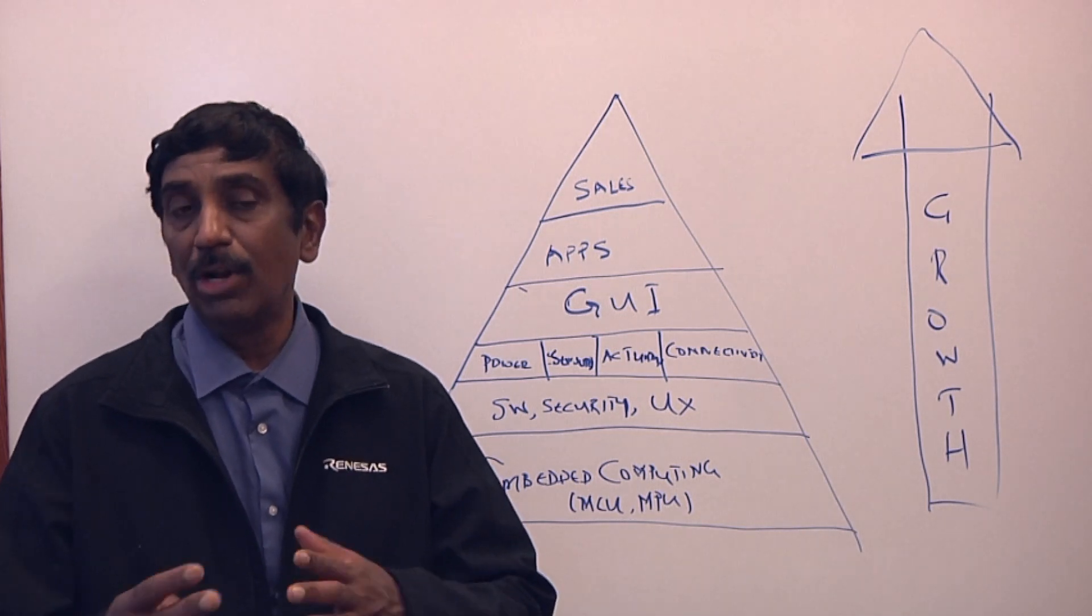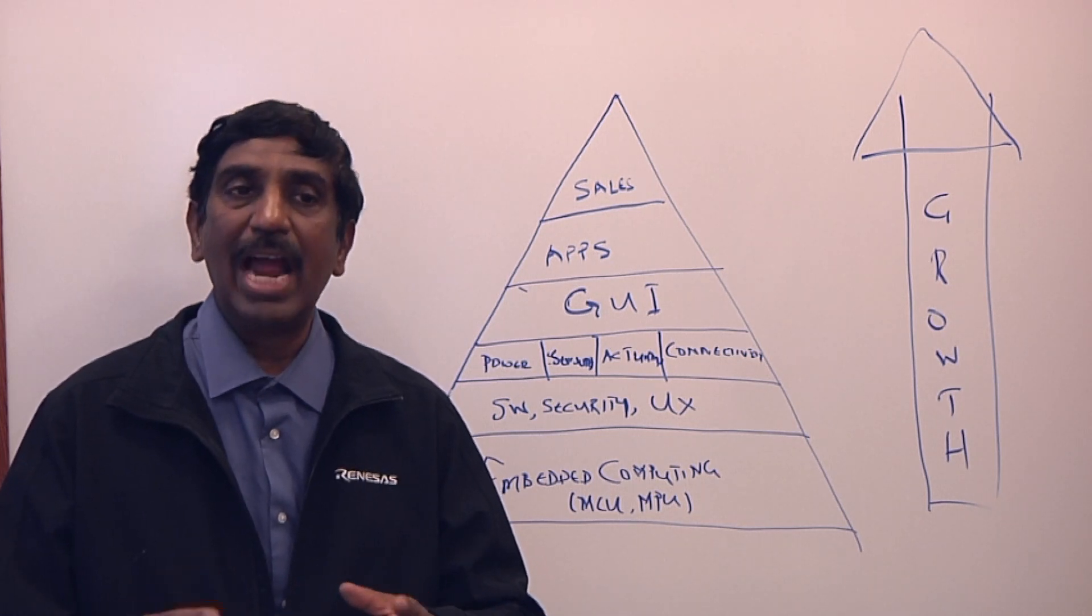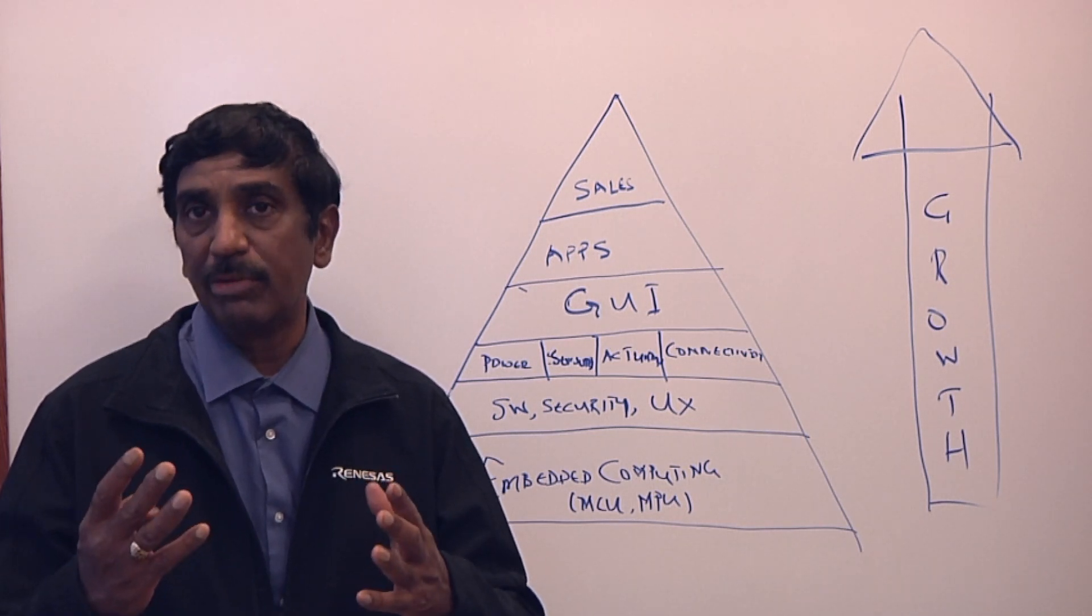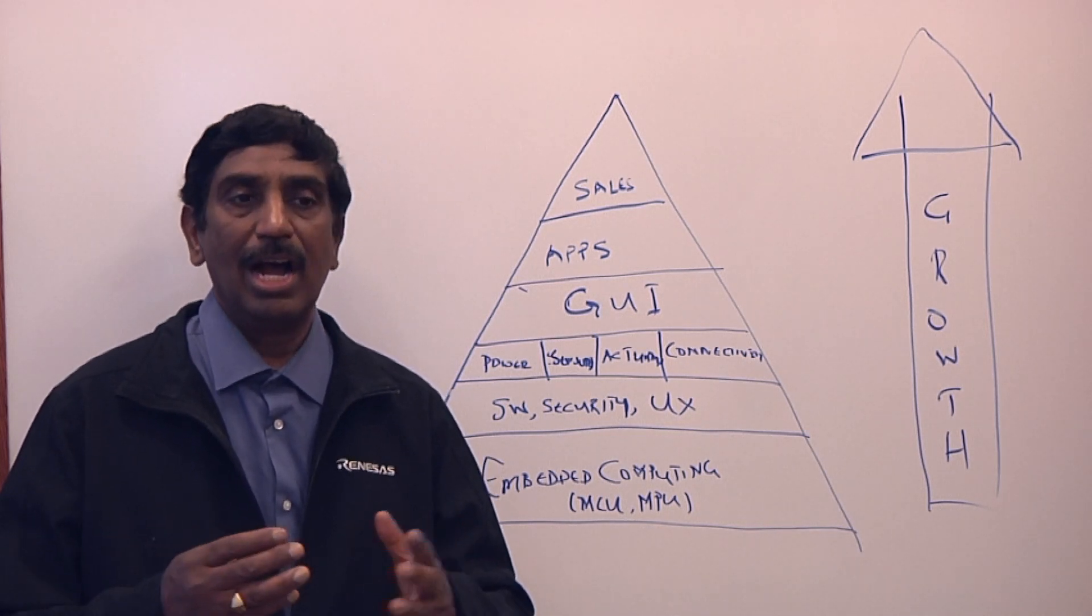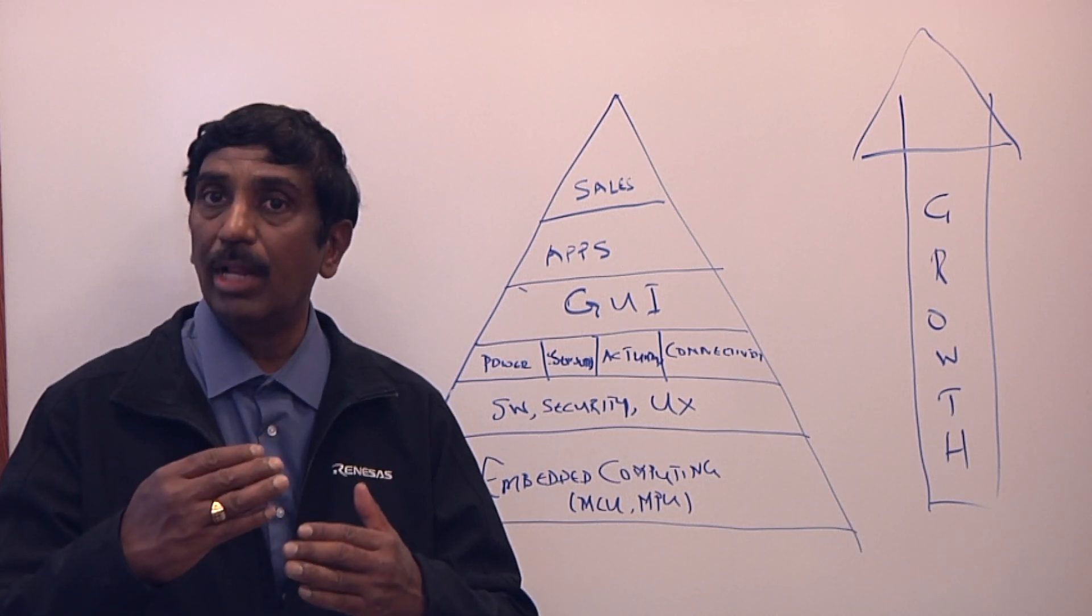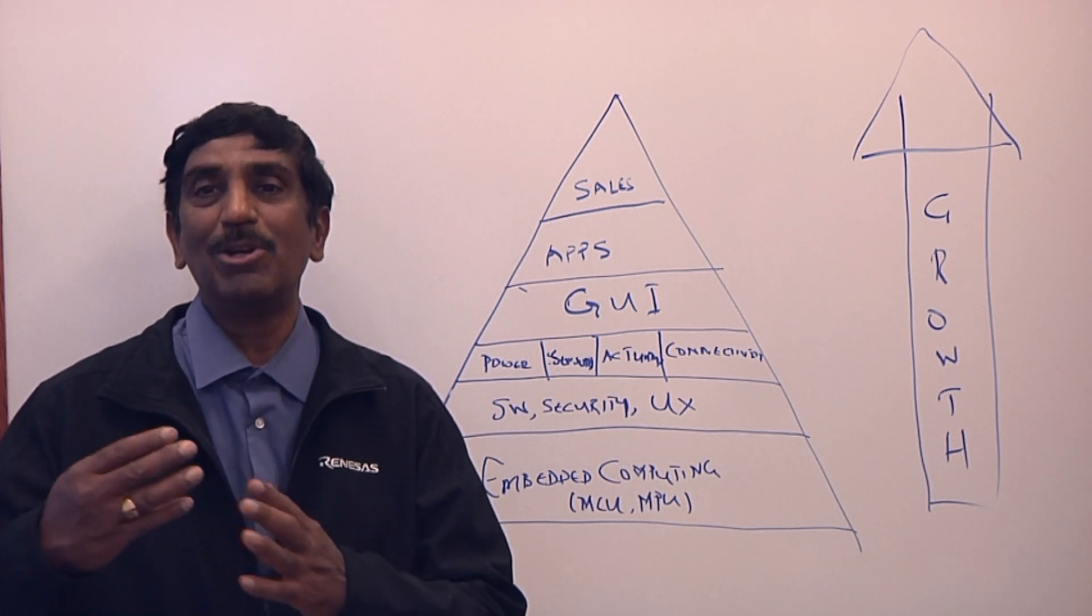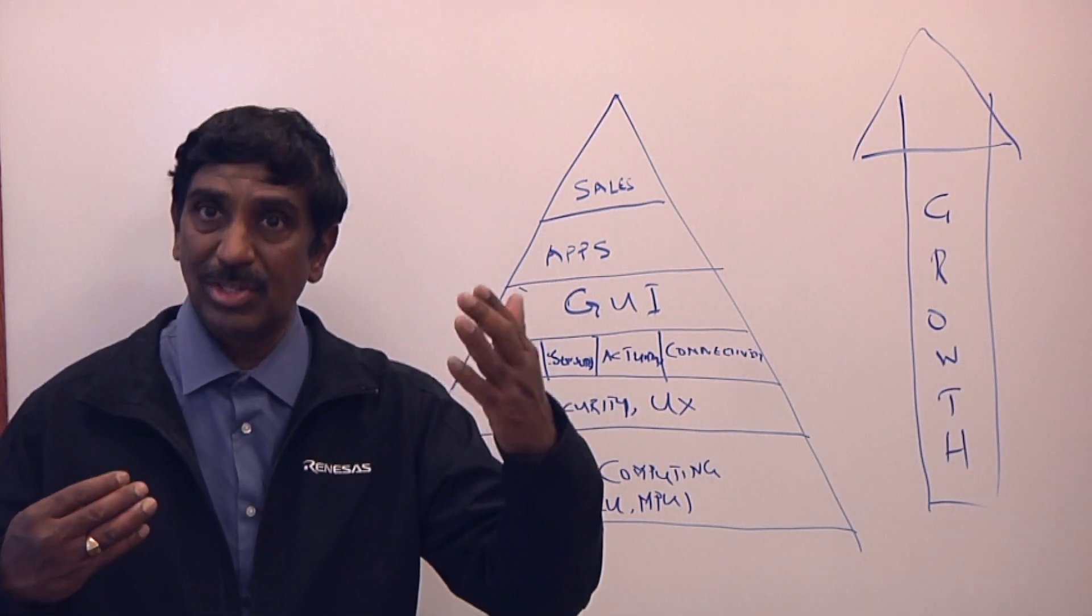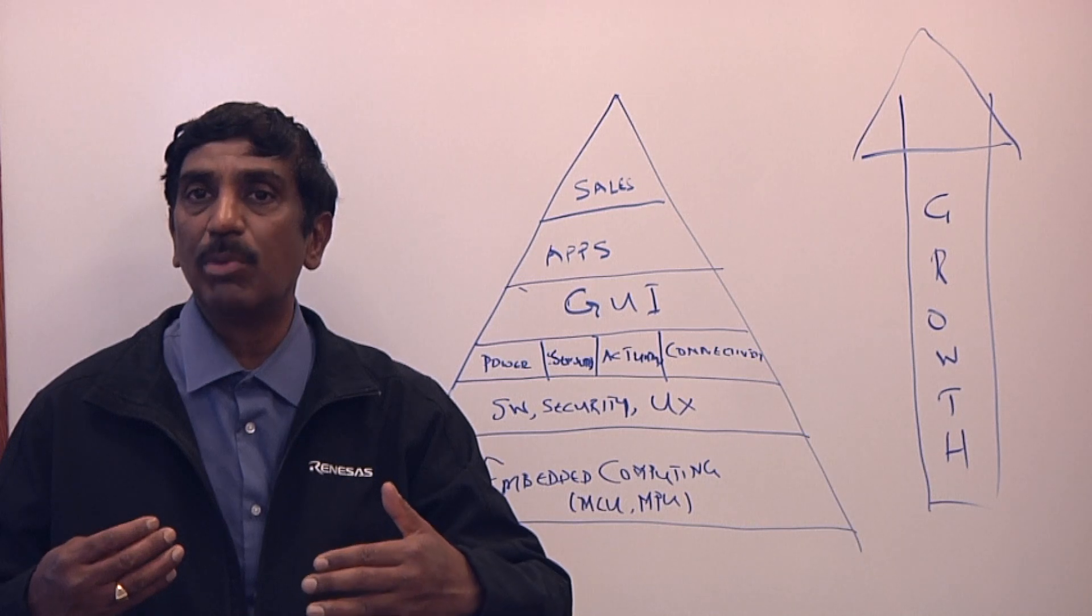I just gave you earlier a couple of examples on certain features that might make sense to handle on the endpoint. And a great example is really voice, because you could have features that are key phrases that can be handled at the endpoint very well. But if it's natural language processing, more often that's still better to be running on the cloud, although that's changing to some extent. But that would be a great example of where the different kinds of partitioning would occur.